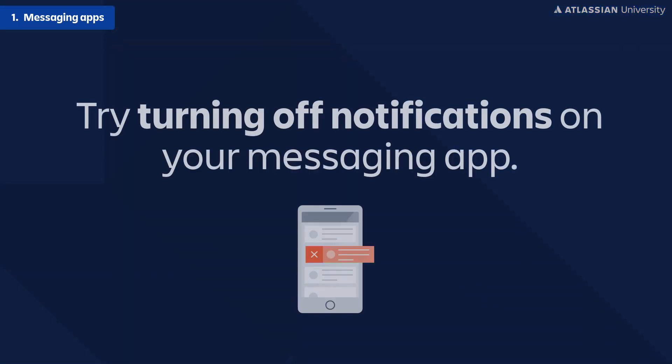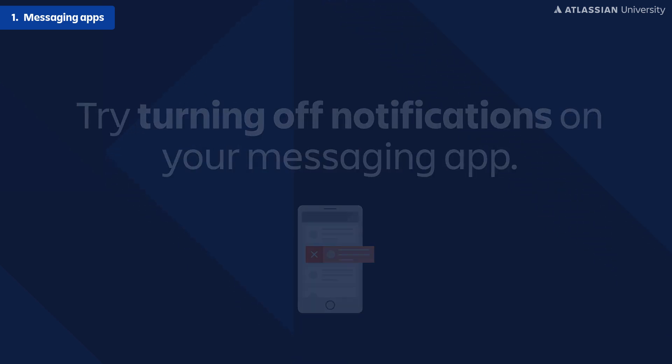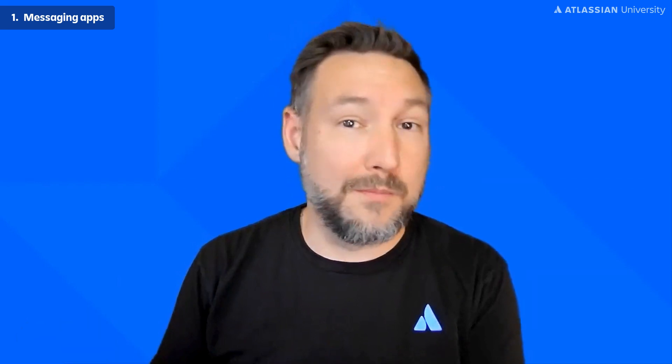Another tip around messaging tools: consider turning off notifications. Every time you see that notification pop up, you immediately go to it — back and forth constantly. Your goal is to have focused, heads-down time. Turn off your notifications and instead put dedicated time on your schedule for when you're going to check those messages and respond. That way, it's based off your schedule and you can control your environment to get stuff done.